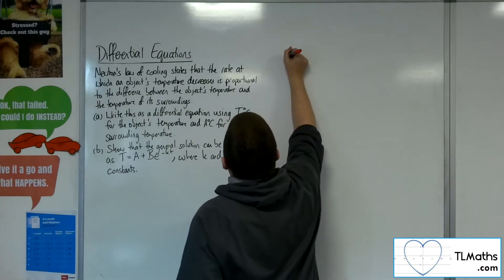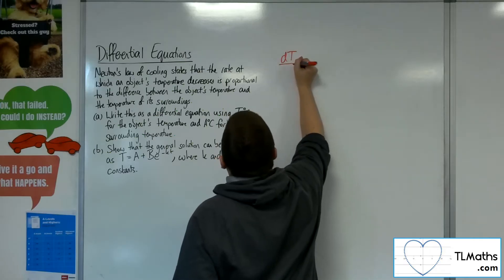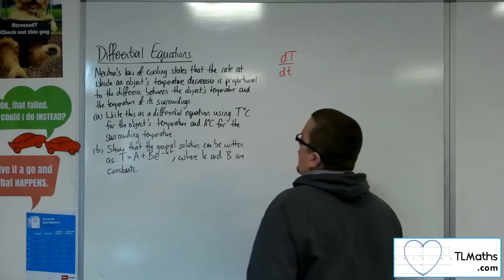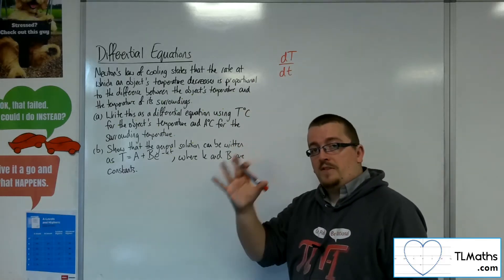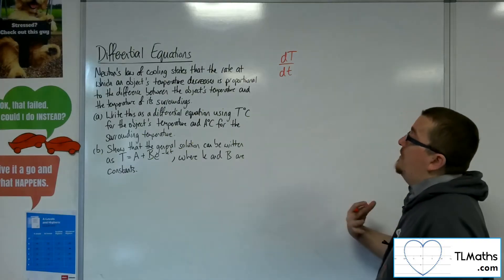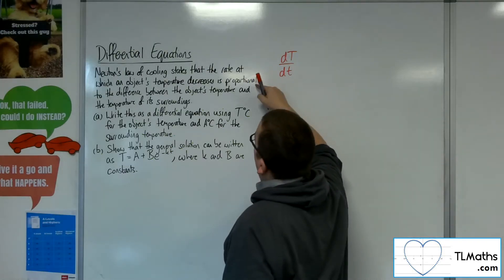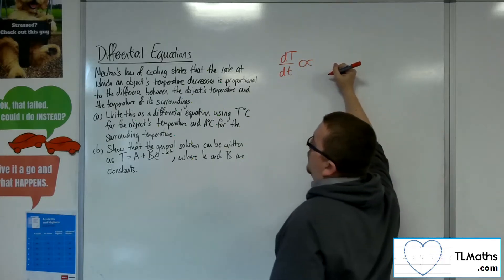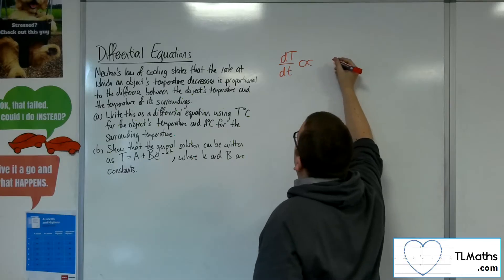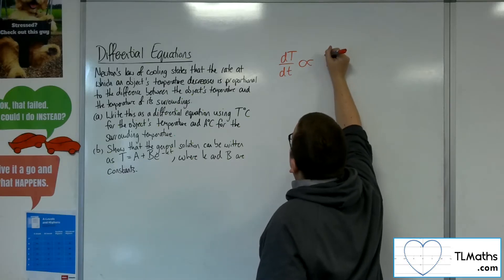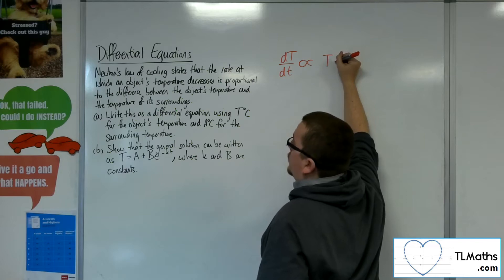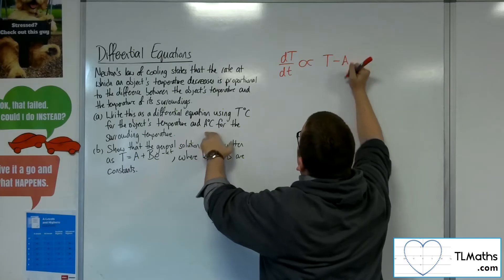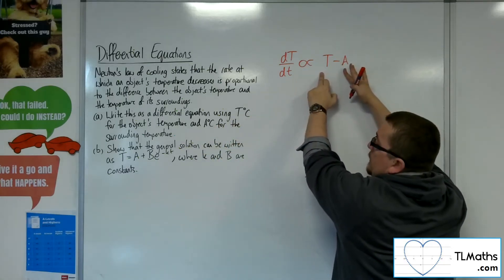So the rate at which the temperature is decreasing with respect to time is dT/dt, capital T for temperature and lowercase t for time. And we're saying that's proportional to the difference between the object's temperature and the temperature of its surroundings. So the object's temperature is capital T, the temperature of the surroundings is A. So that would be the difference between the two.